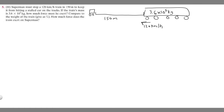In this problem we're told Superman must stop a 120 km per hour train in 150 meters to keep it from hitting a stalled car on the tracks. The train's mass is 3.6 times 10 to the 5th kg, and we need to find how much force he must exert. I'm just going to be solving for the amount of force he must exert.